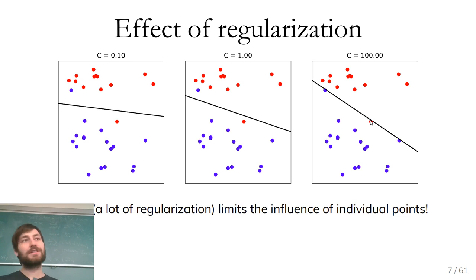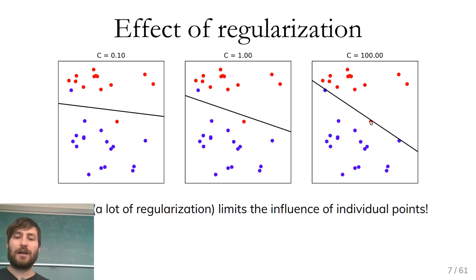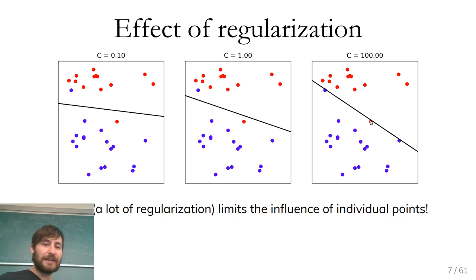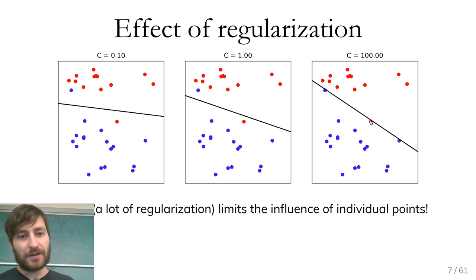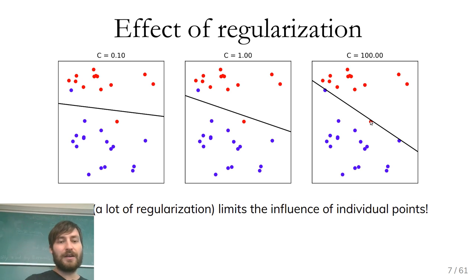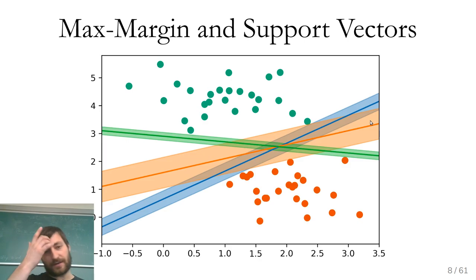That was all I want to say about logistic regression. Now let's come to support vector machines. As I said before, they're very, very similar actually. The motivation is different, but the math is really quite similar.